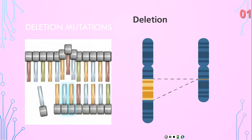Deletion mutations occur when part of the DNA molecule is not copied during replication. These mutations can occur at all parts of the chromosome. It was reported that the mutation spectrum of BRCA1 is found from PCR-based mutation screening methods. Some of these methods are SSCP, protein truncation tests, and direct sequencing using genomic DNA.